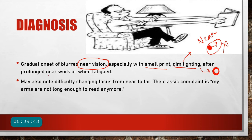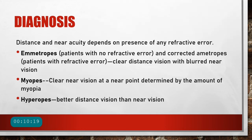After prolonged near work or when the patient is fatigued, having already used their accommodation, symptoms become more enhanced. The patient also complains of difficulty changing focus from near to far and vice versa. The classic complaint is 'my arms are not long enough to read anymore' — the patient keeps putting reading material farther away until they cannot extend further and it is time to visit the doctor.